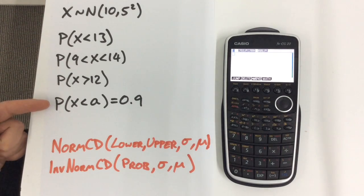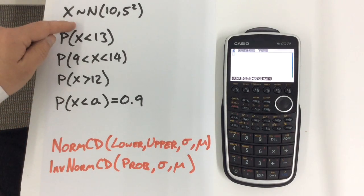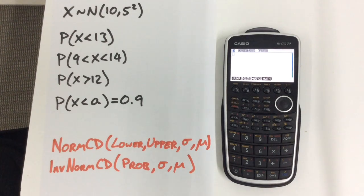These are the ones we're going to work on and we're going to use this distribution: X behaving normally with a mean of 10 and a variance of 5² or 25, so the standard deviation is 5.